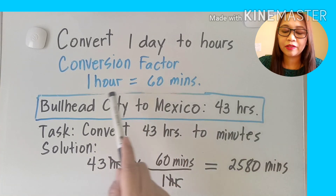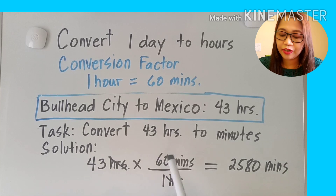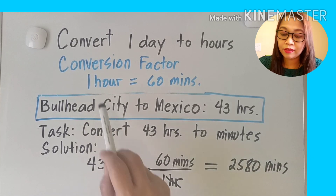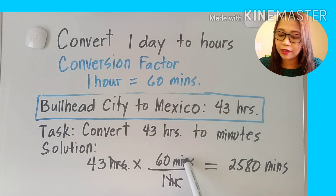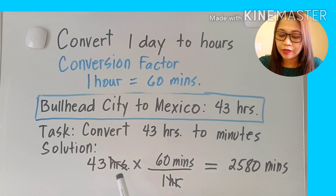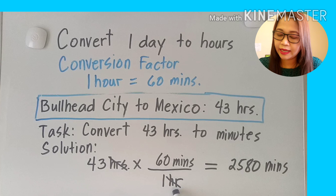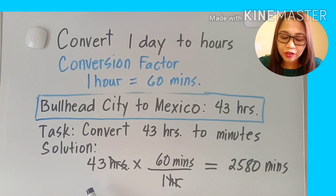We are going to use the conversion factor: one hour equals 60 minutes. For the solution, write the given 43 hours and multiply by the conversion factor. Notice that I put 60 minutes in the numerator and one hour in the denominator, so I can cancel out the matching units.